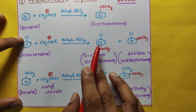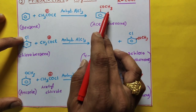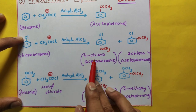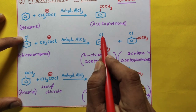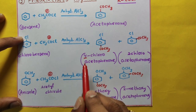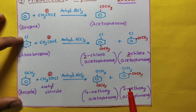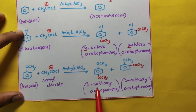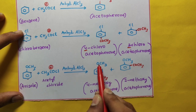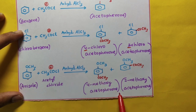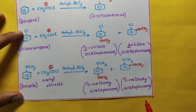Let us see the names. Benzene with COCH3 is acetophenone. But the 4th position has chlorine — 1,2,3,4 — so it is 4-chloroacetophenone. The ortho product has chlorine at the 2nd position: 2-chloroacetophenone. For anisole: the 4th position has a methoxy group — 1,2,3,4 — giving 4-methoxyacetophenone. And the 2nd position methoxy group gives 2-methoxyacetophenone.